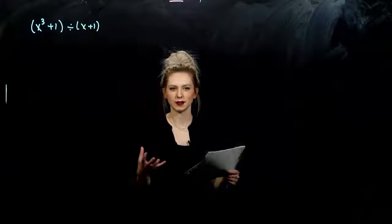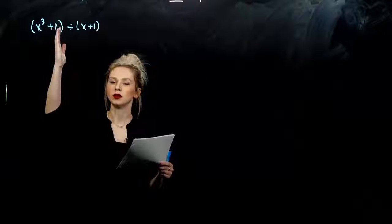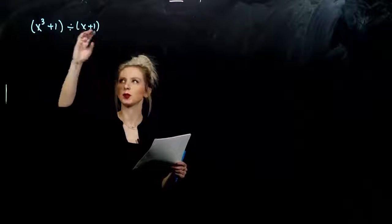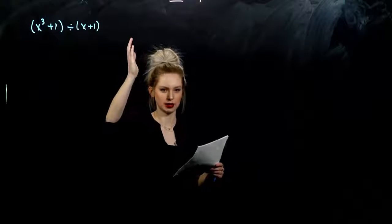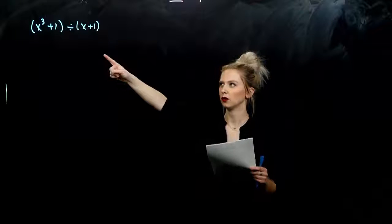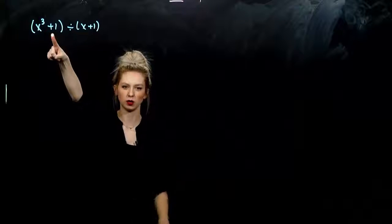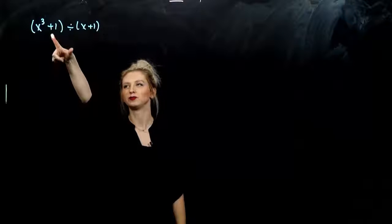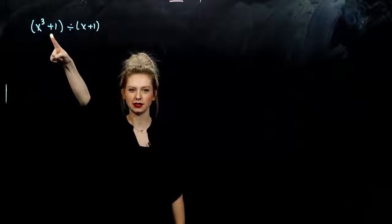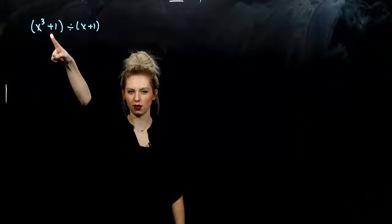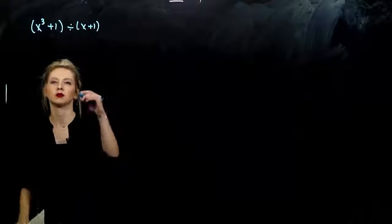In all of the previous examples, we had every single power represented from our largest power on our variable down to a constant. But here, what factor am I missing in this polynomial? What x powers haven't I hit? x squared and x itself. So we need to have placeholders when we go to write it below.